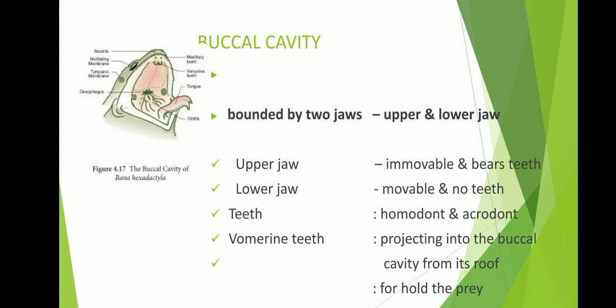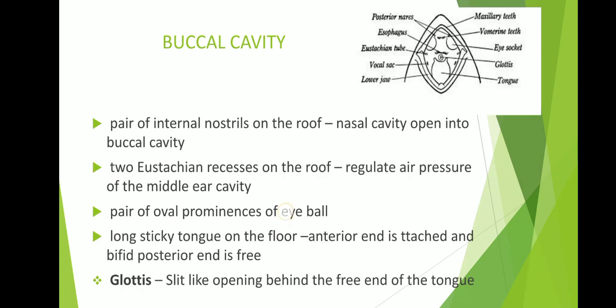What is the function of the teeth present in the frog? Unlike in human beings, the function of the teeth in frog is to hold the prey and prevent it from slipping out. The teeth in frog are not meant for chewing — they simply hold the prey and prevent it from slipping out.